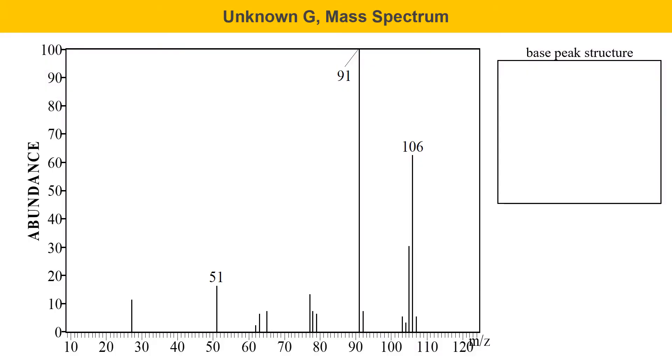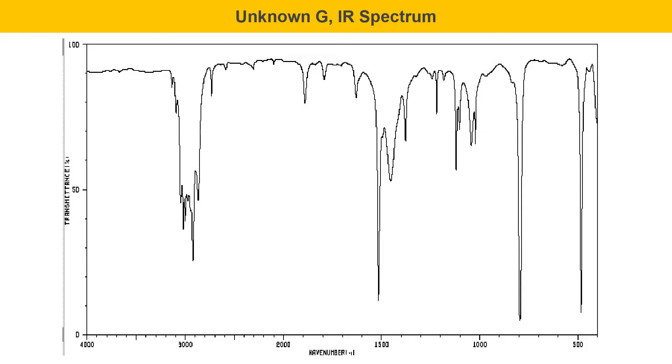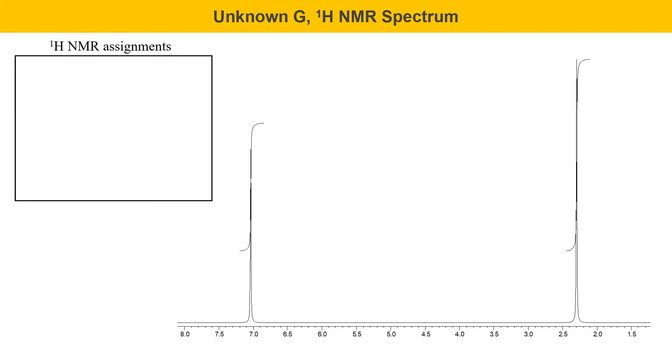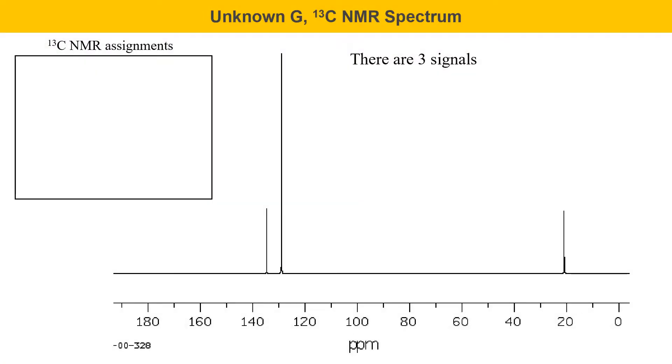Unknown G has a mass spectrum that's shown here. It has an IR spectrum that's shown here. Again, this is one that has a peak at about 1500 that you should try to figure out. The proton NMR spectrum for unknown G is here. And one of the things that's interesting about this one is just how simple it is. First of all, there's only two signals and those signals are singlets. This is the proton NMR spectrum, but it's very simple. The carbon NMR spectrum for unknown G is also quite simple. It just has three signals.